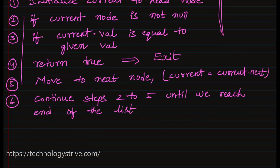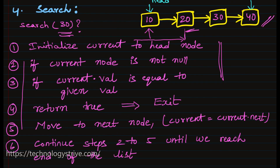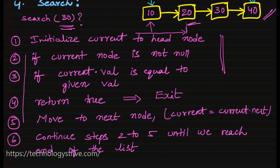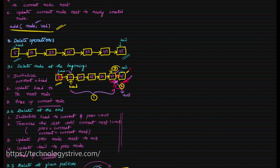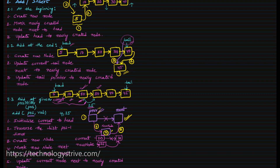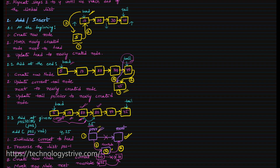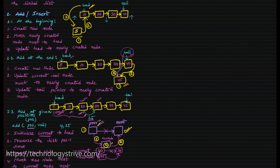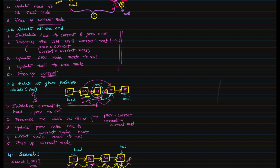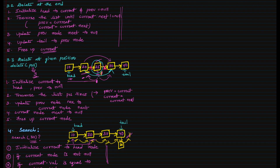This is how we perform the search operation. These are the different operations which we can perform on a linked list. Using these algorithms, you can easily convert them into code specific to your programming language. In the next video we are going to write code for these algorithms using Java. I hope this video is helpful to you — thank you for watching, stay tuned, happy learning.